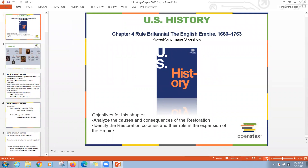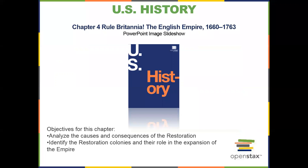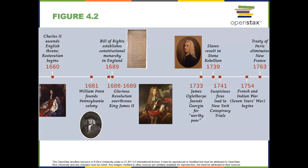We've got a lot to cover in chapter four, so I'm going to jump right into it. We're talking about the English Empire and the reason we're talking about that in U.S. history is because it had an impact on the formation of the United States. In this chapter you will learn to analyze the causes and consequences of the Restoration, identify the Restoration colonies and their role in the expansionism of the British Empire, and learn key figures and players in British history. We are covering a period from about 1660 to 1763.